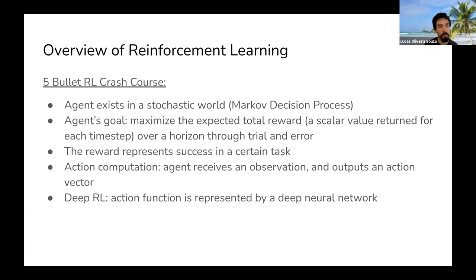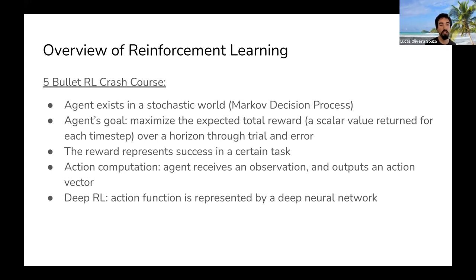The reward on those points can either come from the environment — which would be supervised reinforcement learning — or it could also be what we call an intrinsic reward, where the agent generates its own reward. That would be a sort of unsupervised reinforcement learning. Akash's project is more towards supervised reinforcement learning, and Vivian's project is towards unsupervised reinforcement learning.